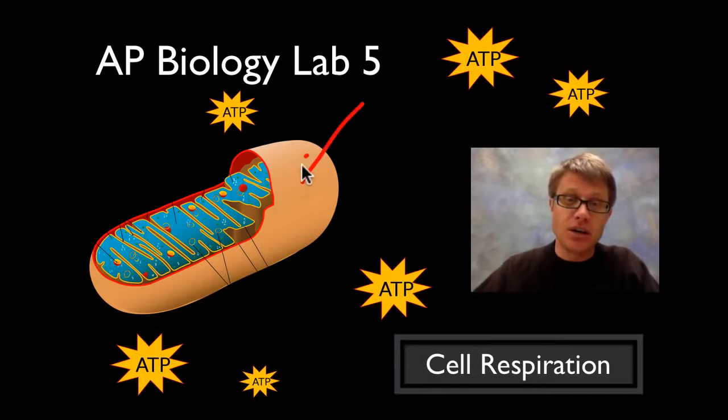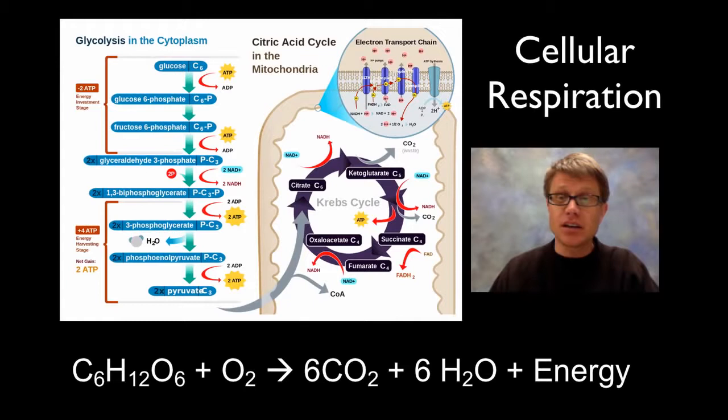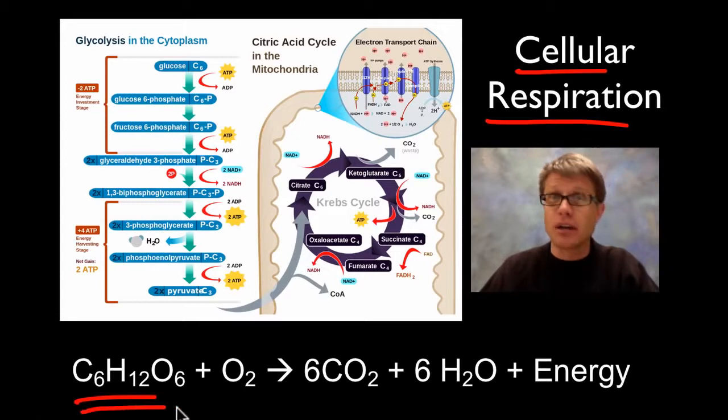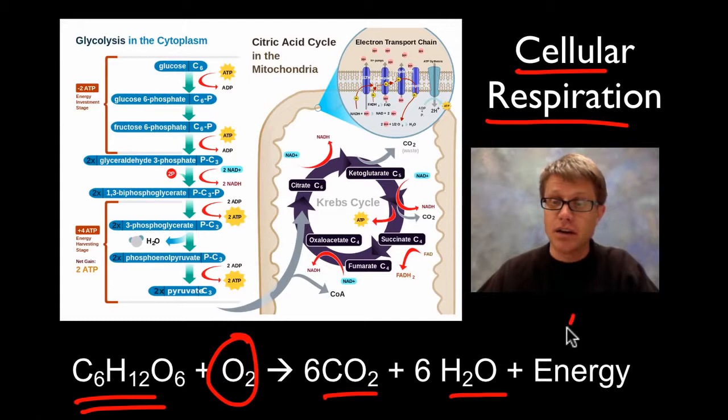In order to do that in eukaryotic cells we need the mitochondria. Basically what goes on in cellular respiration is we're taking a sugar like glucose and in the presence of oxygen we're breaking that down into carbon dioxide, water, and we're producing energy in the form of ATP.